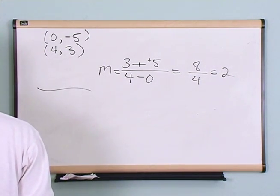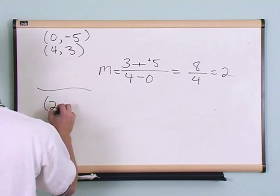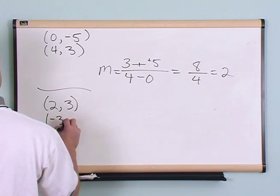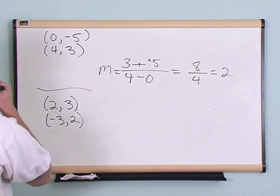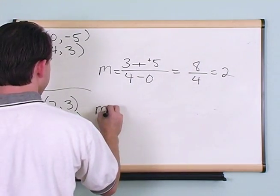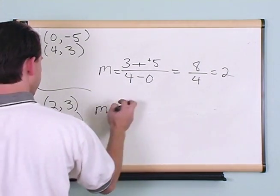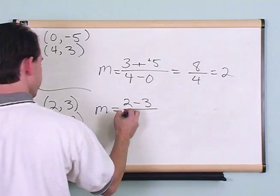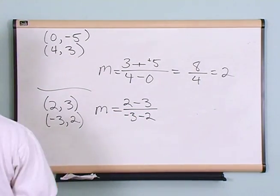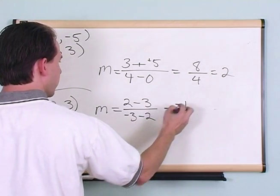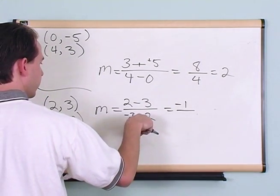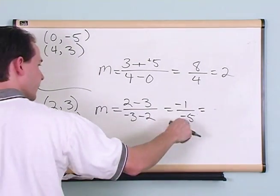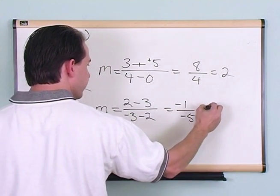Another problem. Let's say we have (2, 3) and (-3, 2). I can say m equals 2 minus 3 over negative 3 minus 2. That gives negative 1 over negative 5. A negative over a negative is always positive, so you get 1 over 5.